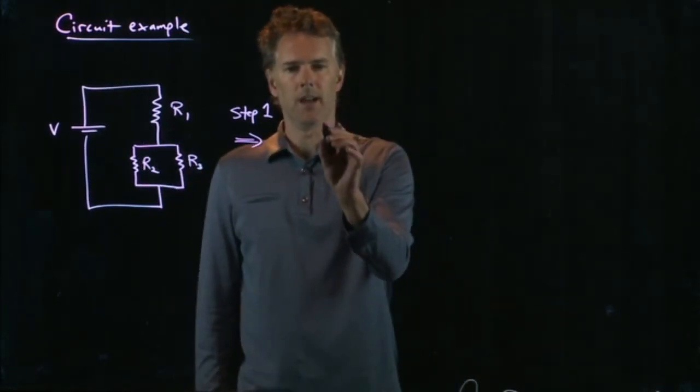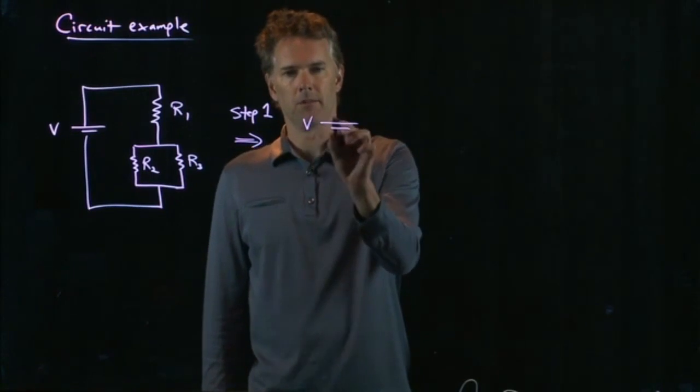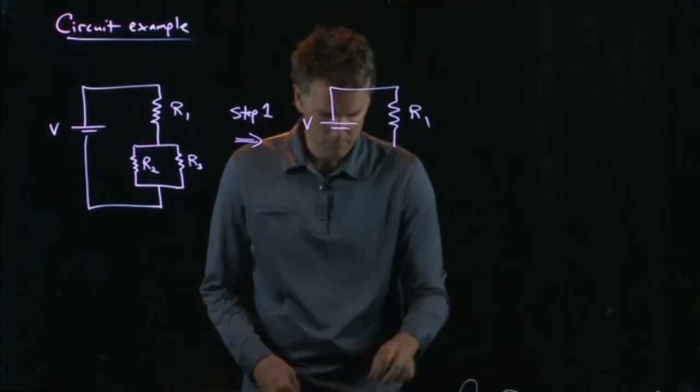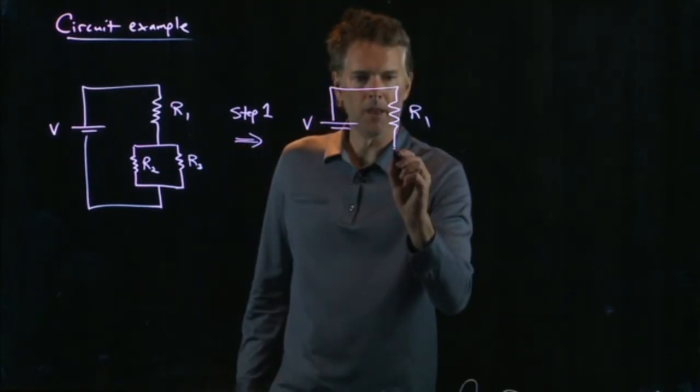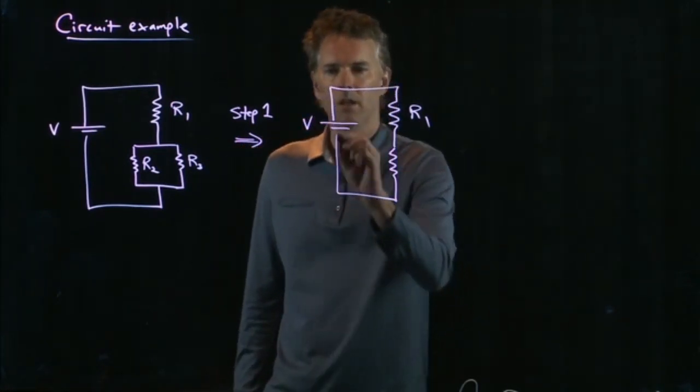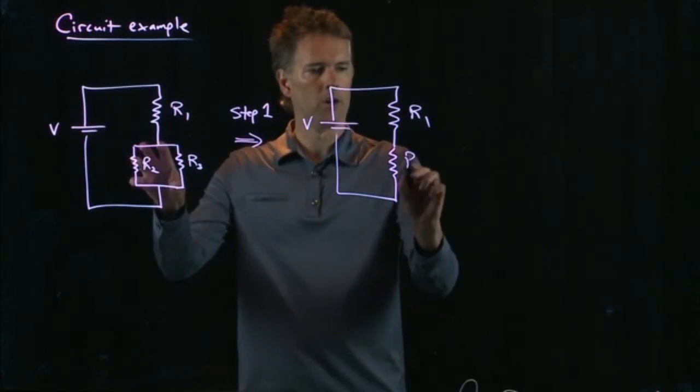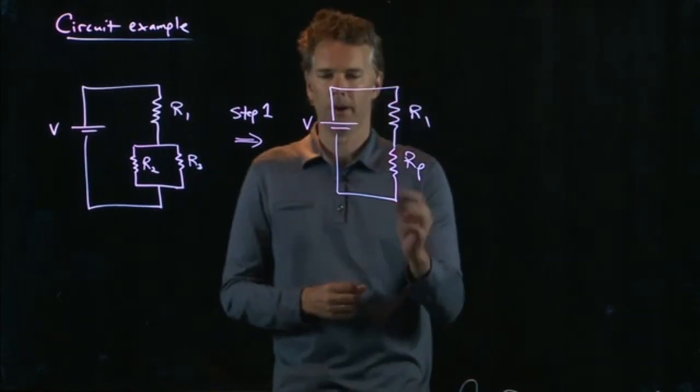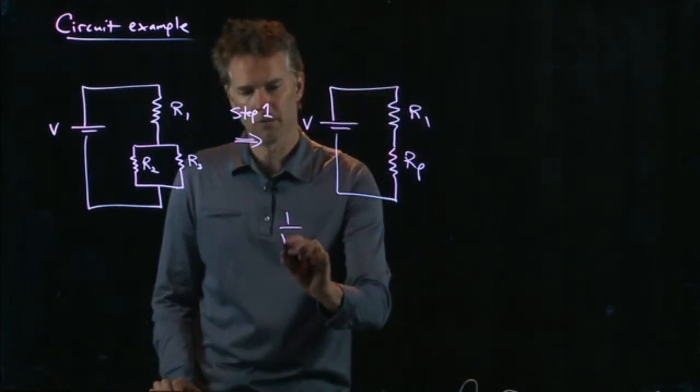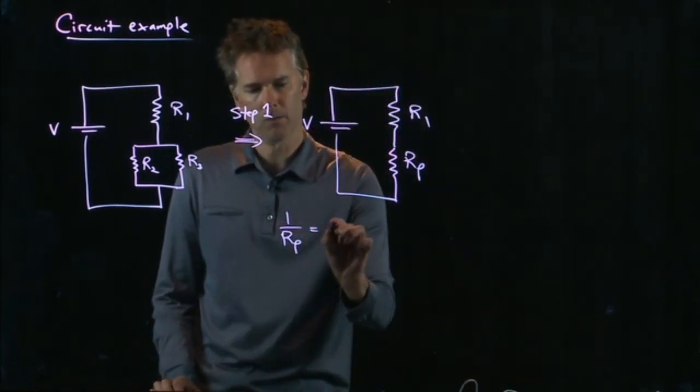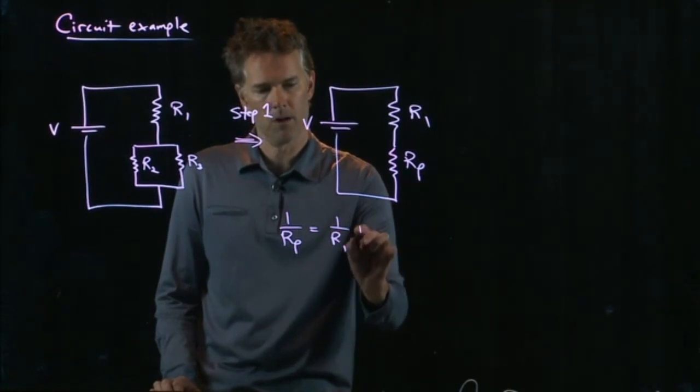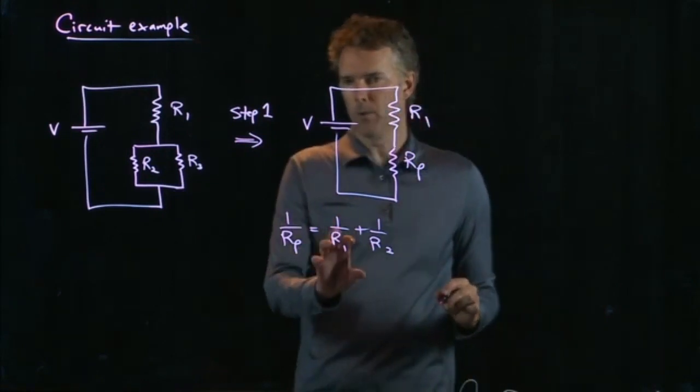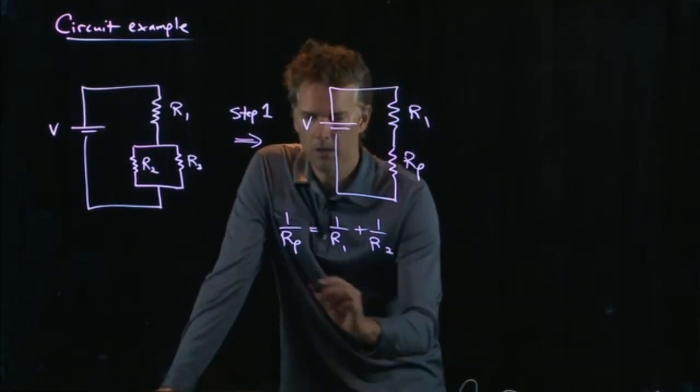So if I do that, I can rewrite this as the following. R1 is still there, we haven't changed it. But this one becomes R parallel. And we know what R parallel is because 1 over R parallel equals 1 over R1 plus 1 over R2.